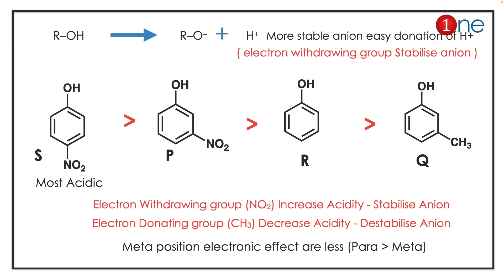Electron-withdrawing groups increase acidity because they stabilize the anion. Electron-donating groups decrease acidity because they destabilize the anion. Moreover, at the meta position the electronic effects are less, so para has a greater effect than meta. Considering all three facts, S comes first because nitro is electron-withdrawing and is in the para position.